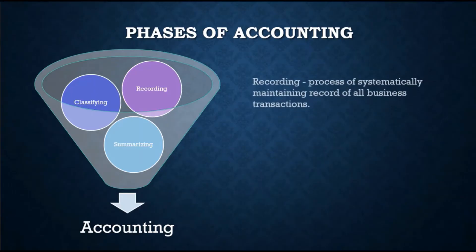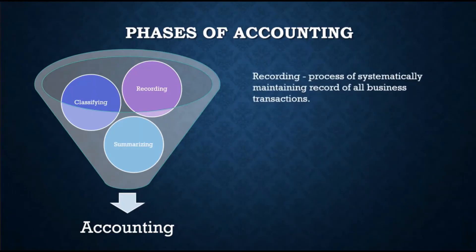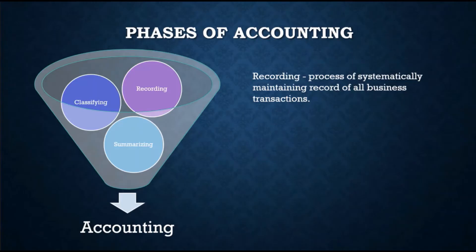The first phase is recording. Recording is the process of systematically maintaining a record of all business transactions, usually done in chronological order or according to the date of occurrence. This is where we record journal entries after analyzing the transactions in the general journal.